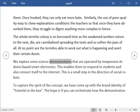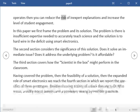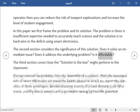We explore some science demonstrations that are operated by inexpensive hardware-based smart electronics. This enables them to respond to students and also connect itself to the internet. This is a small step in the direction of social robots. To capture the spirit of the concept, we have come up with a brand identity of scientist in the box. The hope is if you can orchestrate how the demonstration operates then you can reduce the risk of inexpert explanations and increase the level of student engagement. In this paper we first frame the problem and its solution. The problem is there is insufficient expertise needed to accurately teach science and the solution is to hard wire in the deficit using smart electronics. The second section considers the significance of this solution. Does it solve an immediate issue? Does it address the underlying problem? Is it affordable?